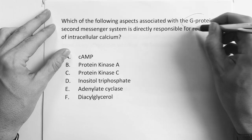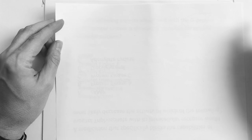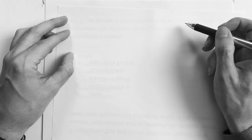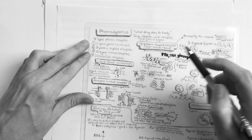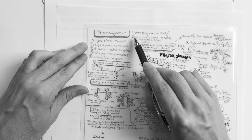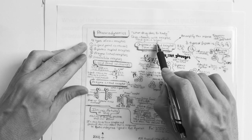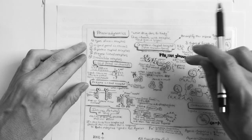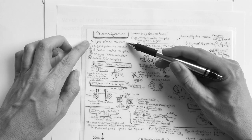Anytime you see G protein stuff, you go back to what we learned. We're in the pharmacodynamics section — pharmacodynamics is what the drug does to the body. The drug interacts with receptors and gives a signal. There are four quick types, but we need to focus on the G proteins.